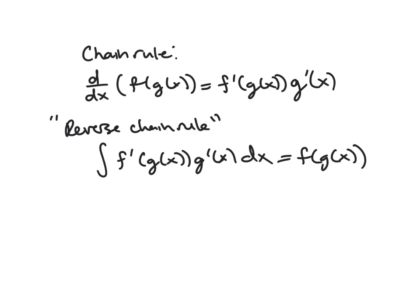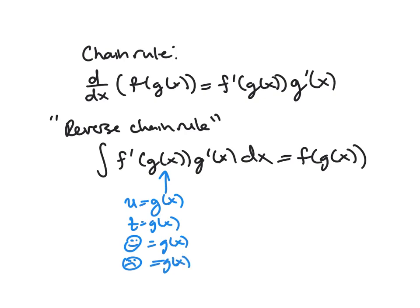So what we're going to look at are things like these. Our substitution will be for this inside function g of x. Most people call it u, but you can call it anything — you could call it t, smiley face, frowny face, who cares. The point is you're substituting something for this inside function. And then our du — because an integral should have the variable you're integrating with respect to — since we've changed our variable from x to u, du would be the derivative of u, so g prime of x times dx.